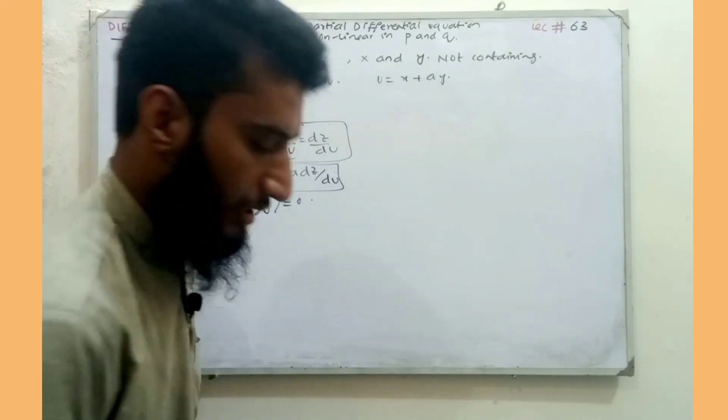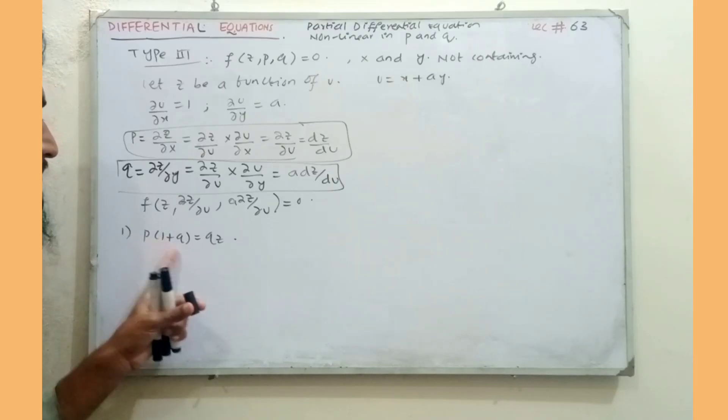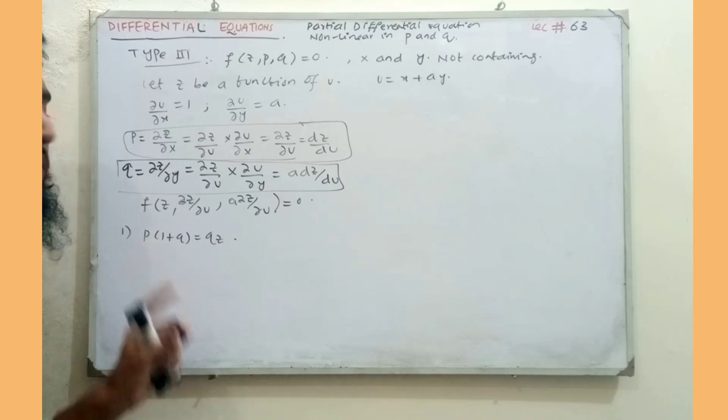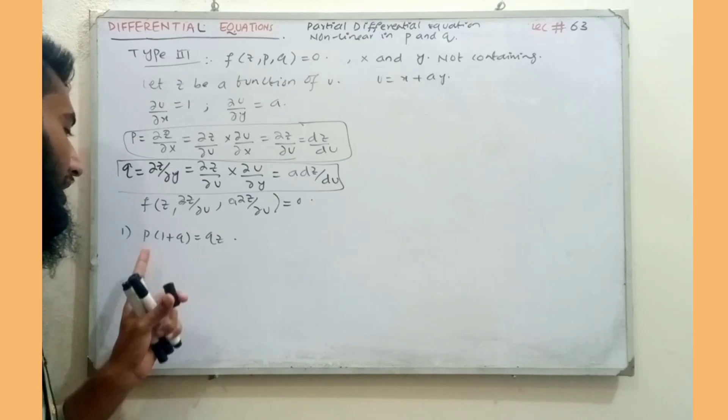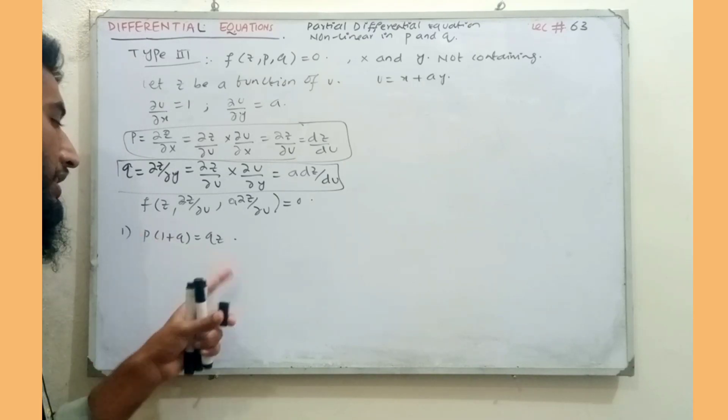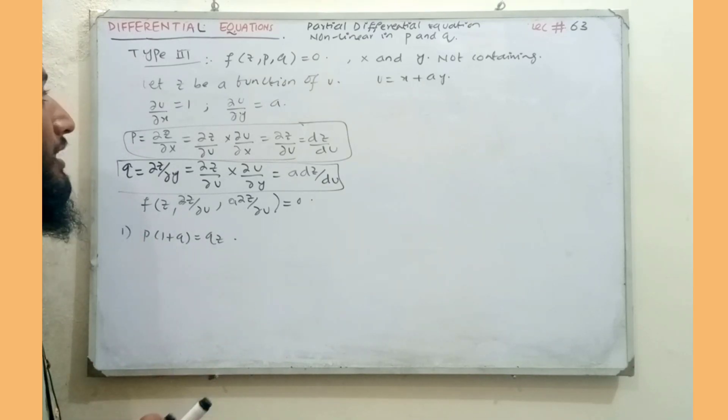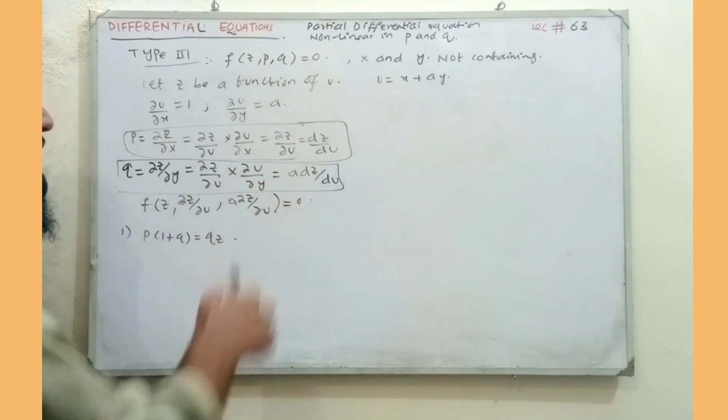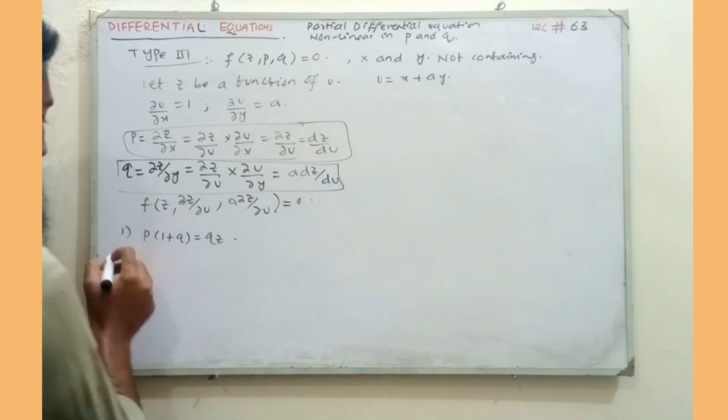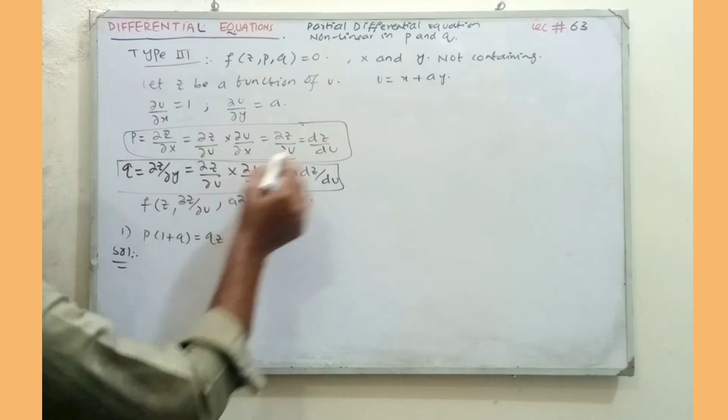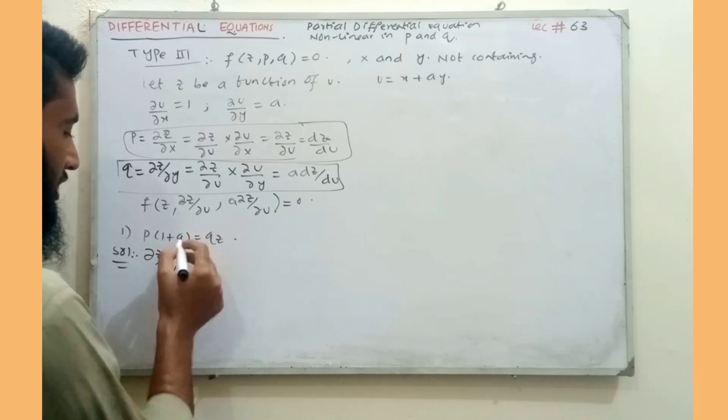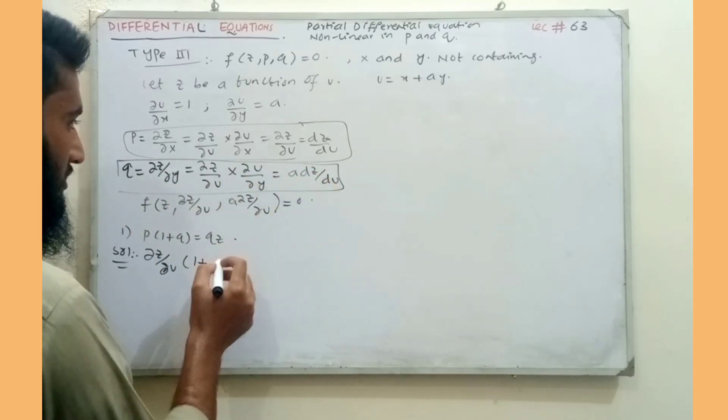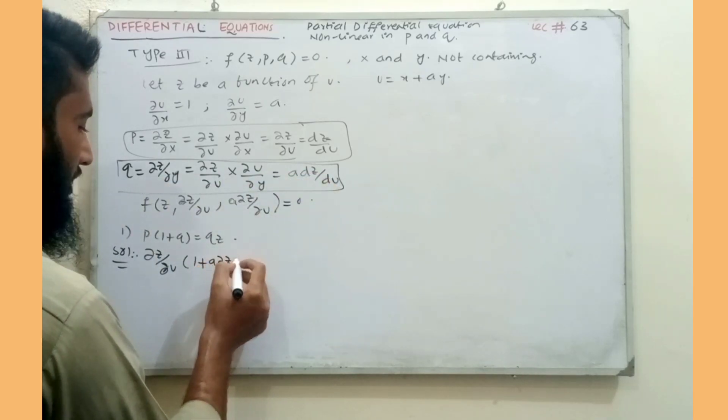Now we have an example. P into one plus Q squared equal to QZ. This is a type of standard form. We have to put P, which is small p, which is dz by du, partial z upon partial u. And Q value is a into partial z upon partial u.